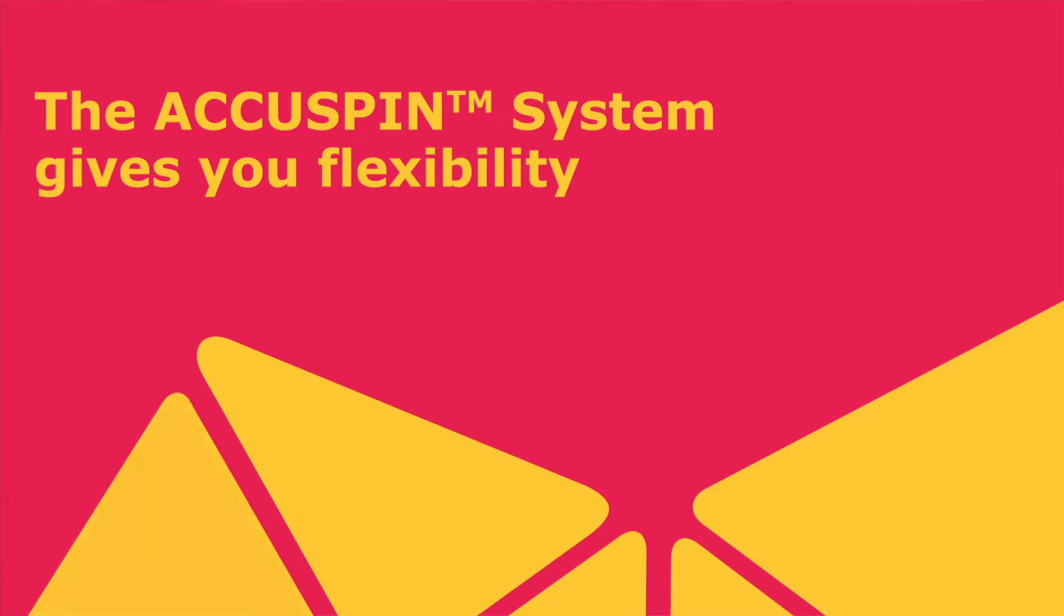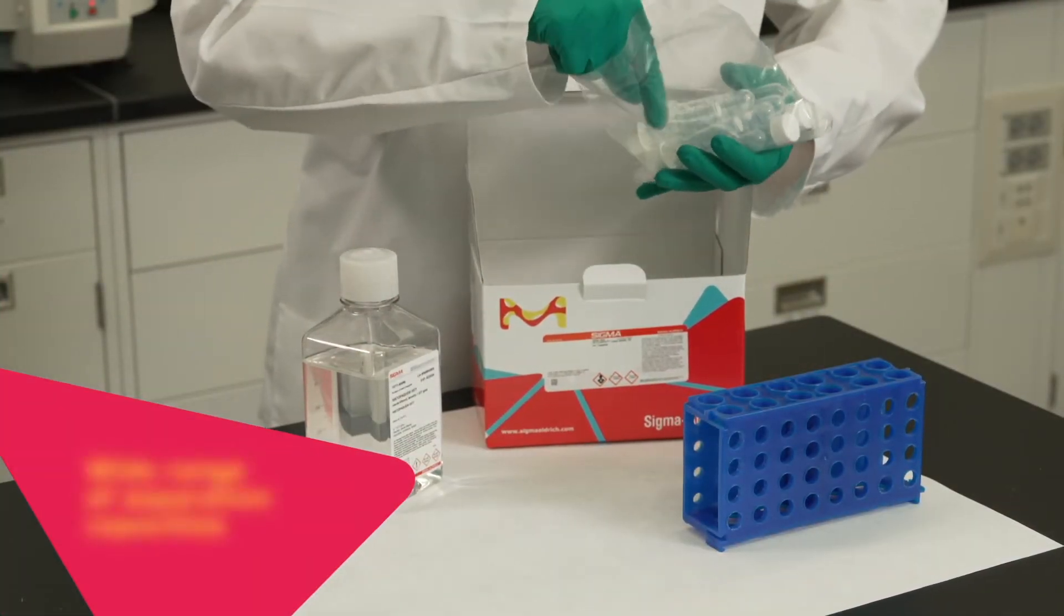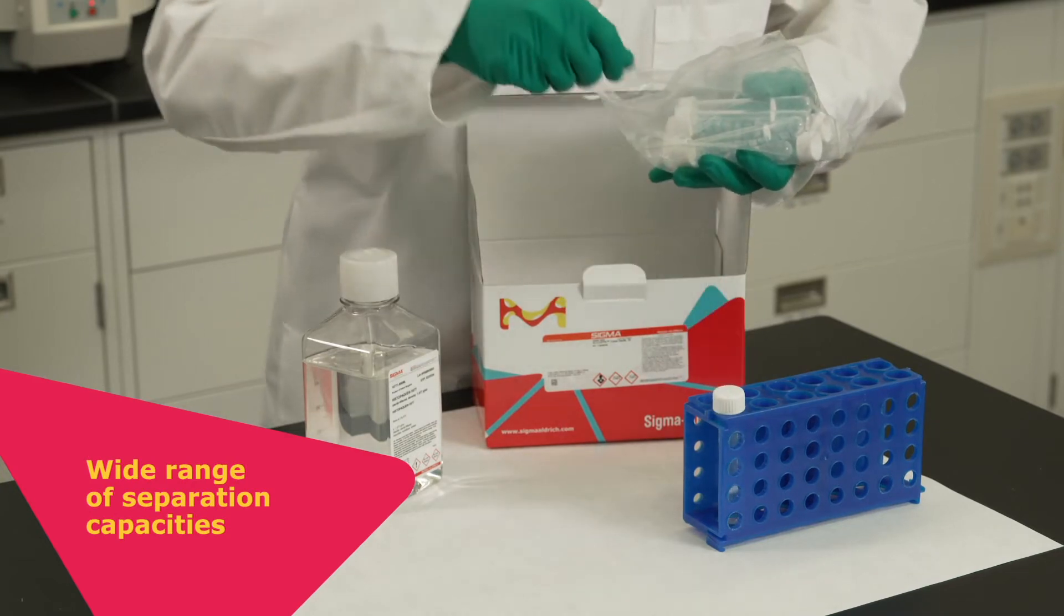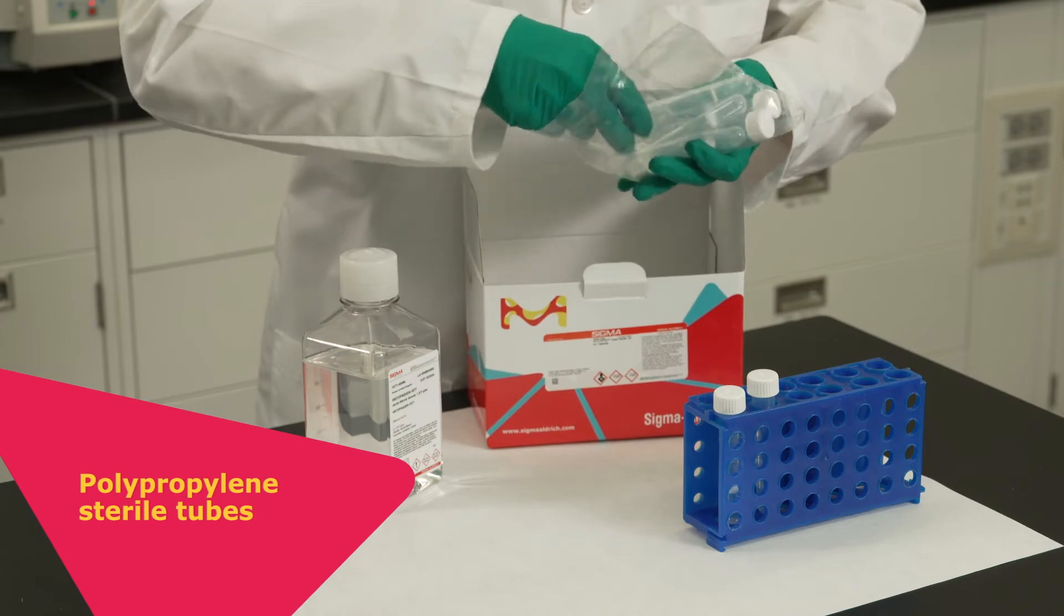Users also obtain flexibility via the AccuSpin product line, featuring five different kits with a wide range of separation capacities, various reagent volumes, and a number of polypropylene sterile tubes.